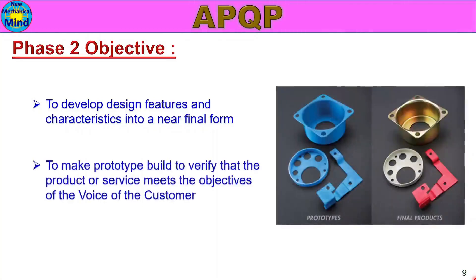To make a prototype build to verify that the product or service meets the objectives of the customer. If you want to use customer-expected product or a model product, or prototype build to produce the product, Phase 2 is the main objective.